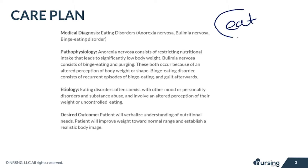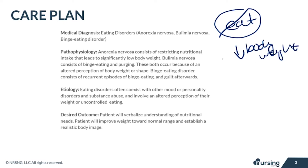Anorexia nervosa consists of restricting the food they're eating, so they're not going to be eating very much at all, which leads to significantly low body weight. Bulimia nervosa will also lead to low body weight, but the difference is they're going to eat and then purge — they're going to vomit it all out afterwards.